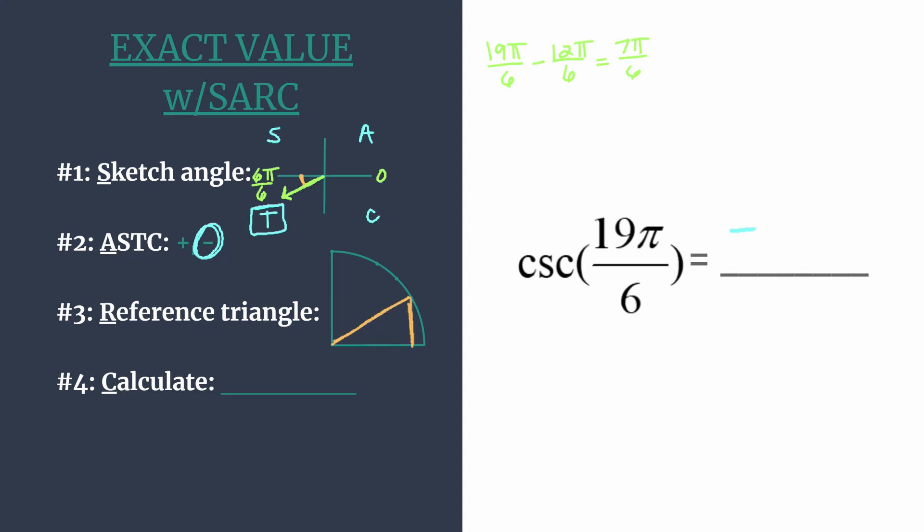So we're working with a 30, 60, 90 special right triangle. And knowing our properties of those, we know that the coordinates that pair with that are √3 over 2 for the x because that horizontal leg is longer and 1/2 for the shorter vertical leg.